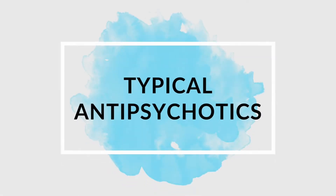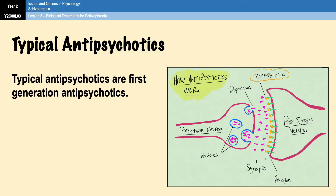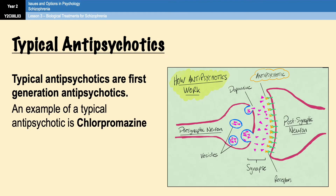We're going to start by looking at the typical antipsychotics, given that they were the first generation drugs to be developed. Typical antipsychotics were first developed in the 1950s, one of the first of which was called chlorpromazine. You don't necessarily need to remember the name, however knowing the name of a drug and being able to put it into an essay or exam question adds a little bit of detail, so if you're good with detail, remember the name.